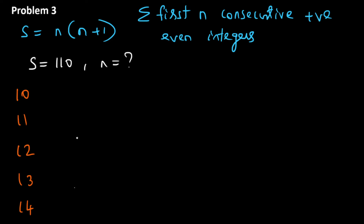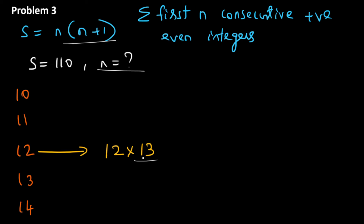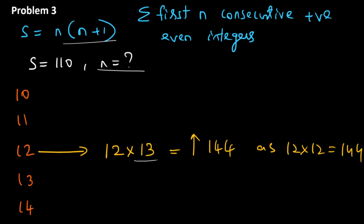Let's substitute n = 12. In this case, n(n+1) becomes 12 × 13, where 13 is n+1. Now we know that 12² = 144, so 12 × 13 will definitely be greater than 144. So definitely it's not the correct answer, because the sum had to be 110.